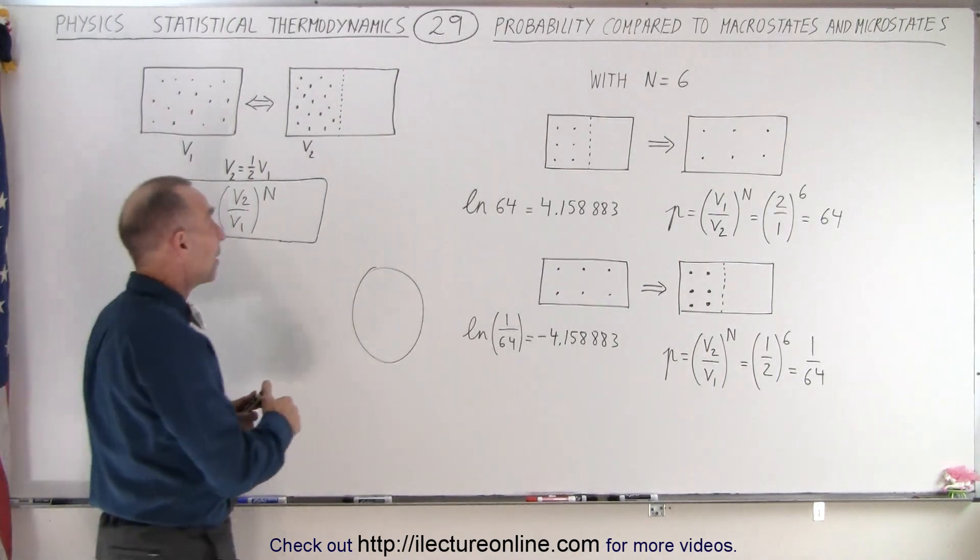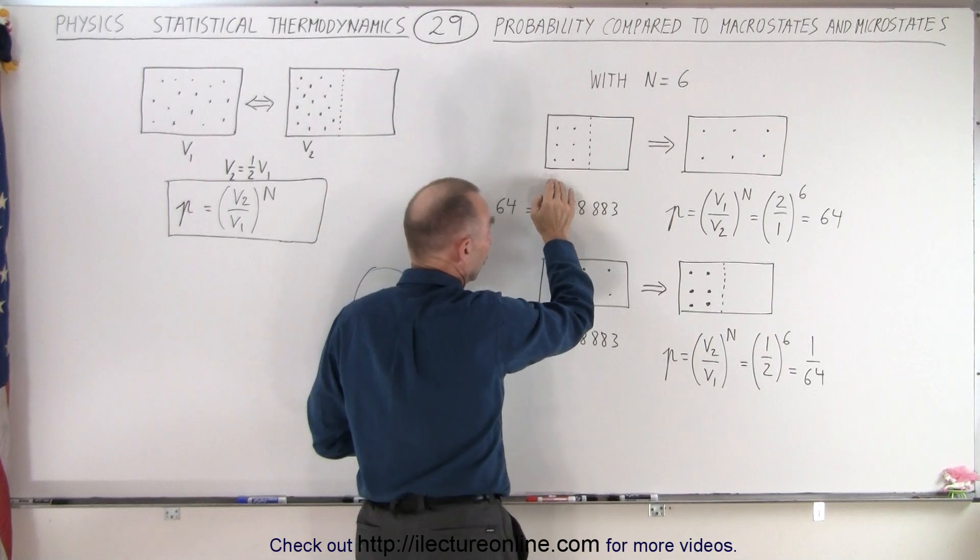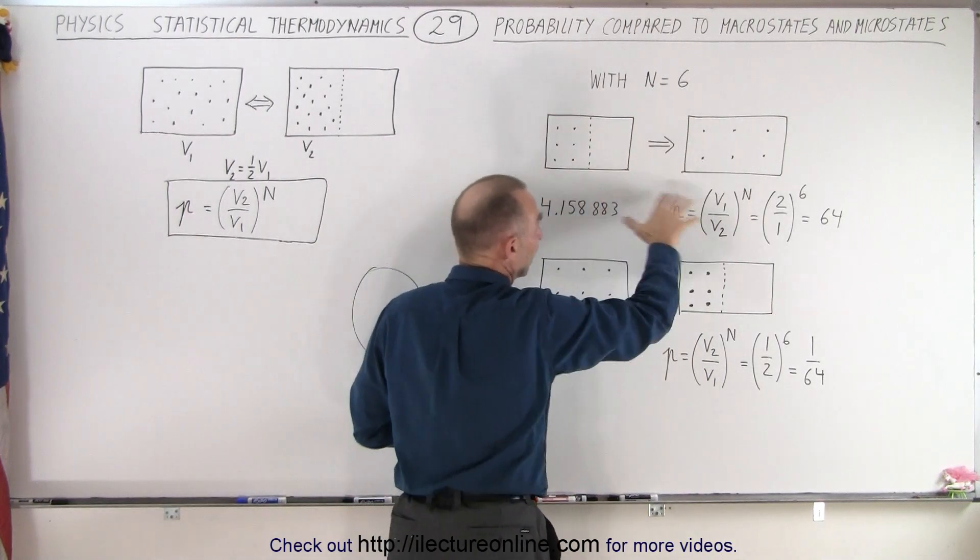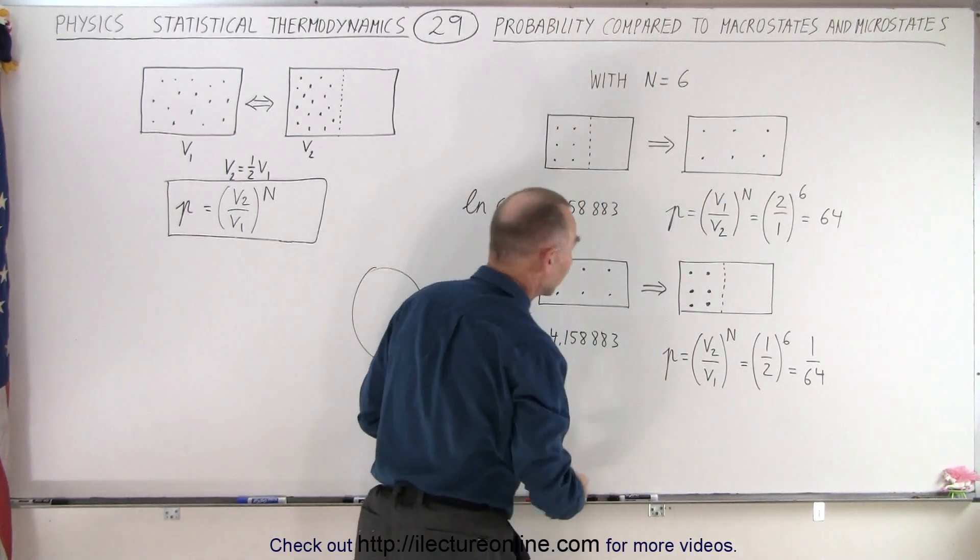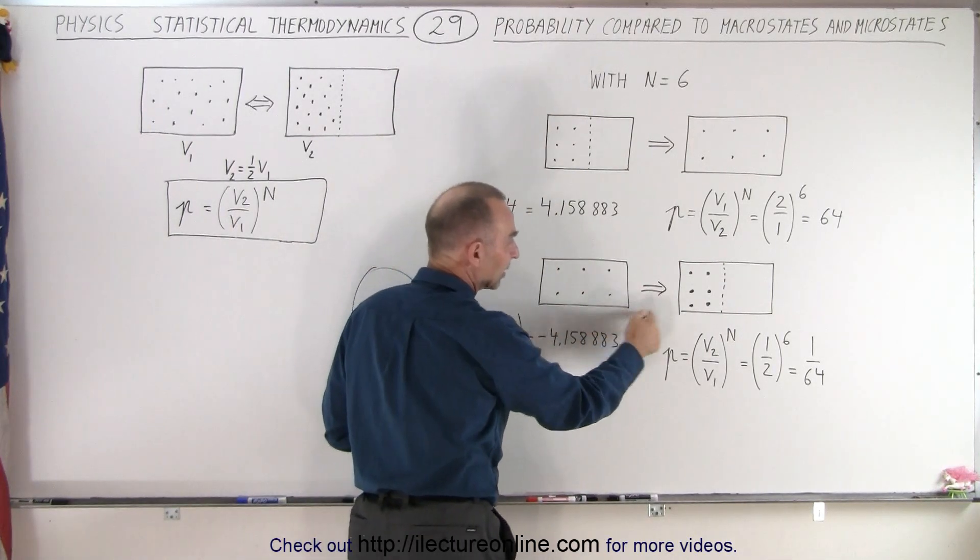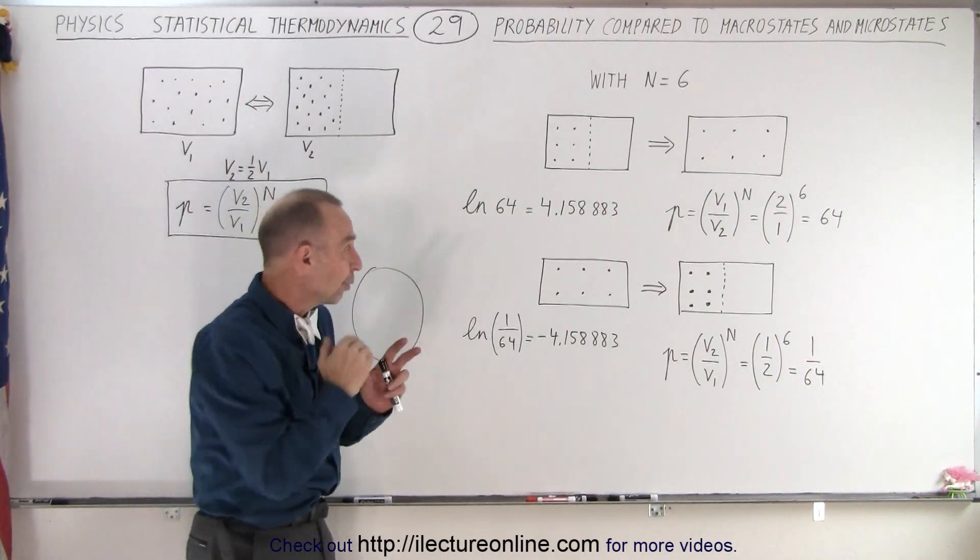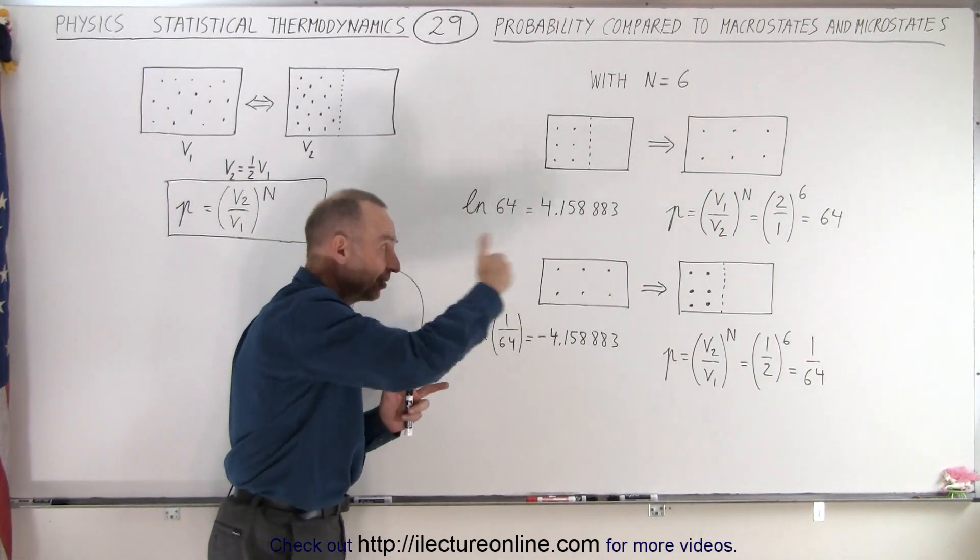In this case, for example, when we have six molecules on one side of the box, what's the probability for all of them to then be distributed throughout the entire box, or going from them being distributed in the entire box and then finding that they're all on one side of the box? What is the probability of going from one to the other side and from the other side back to one?